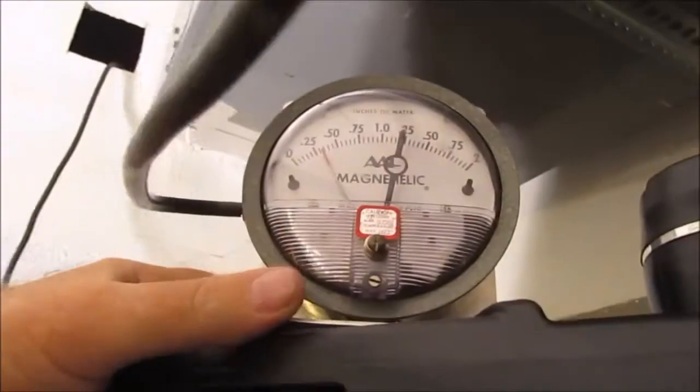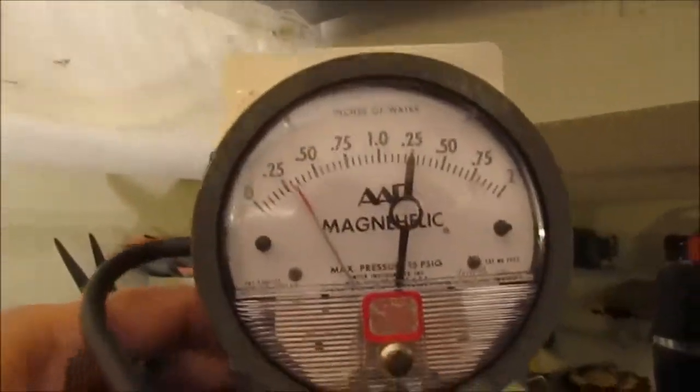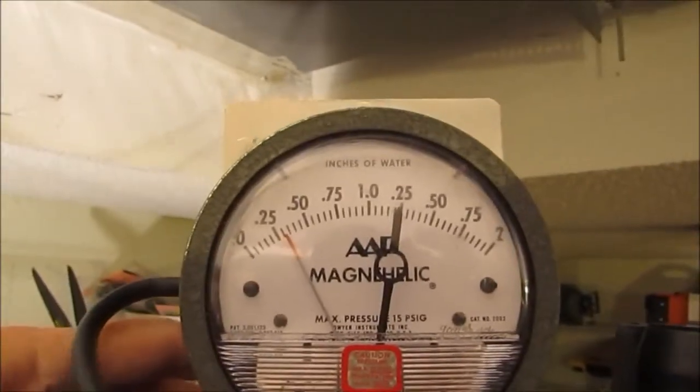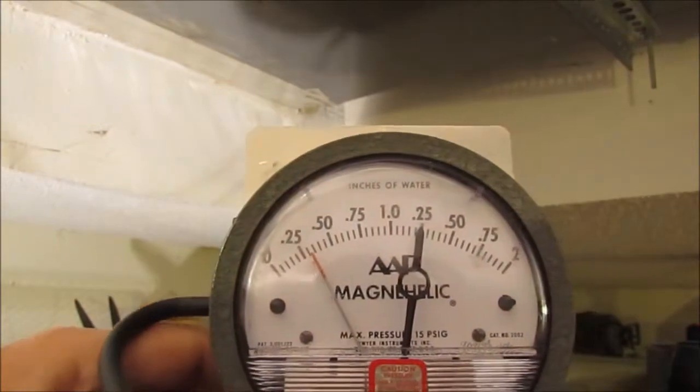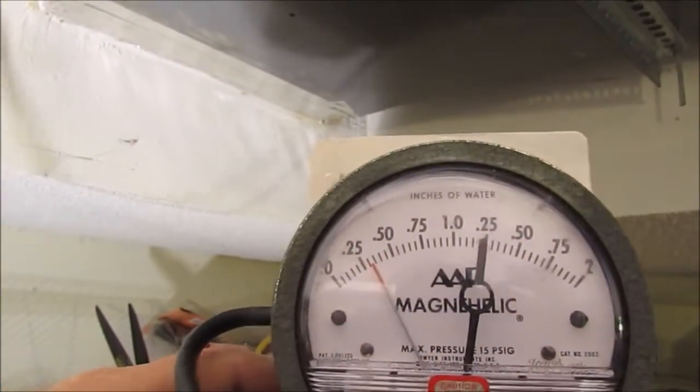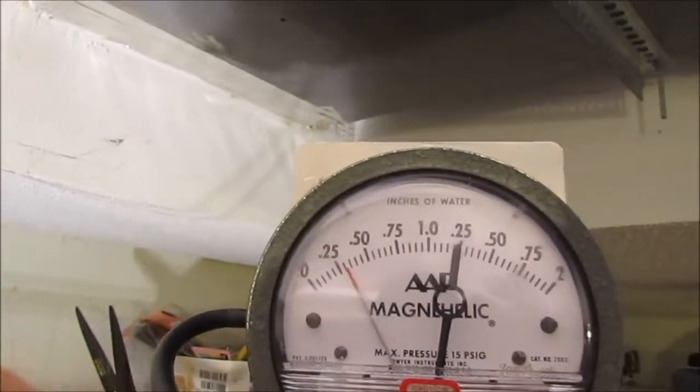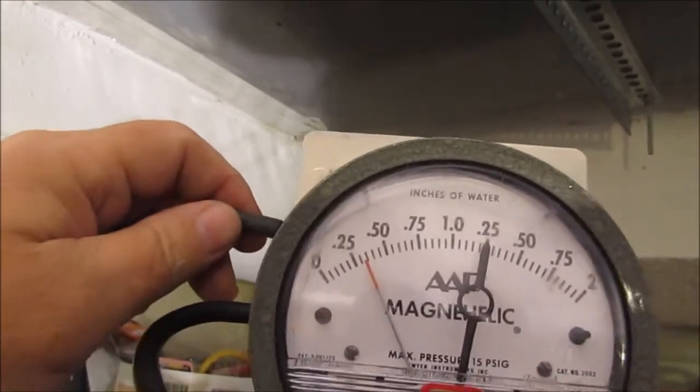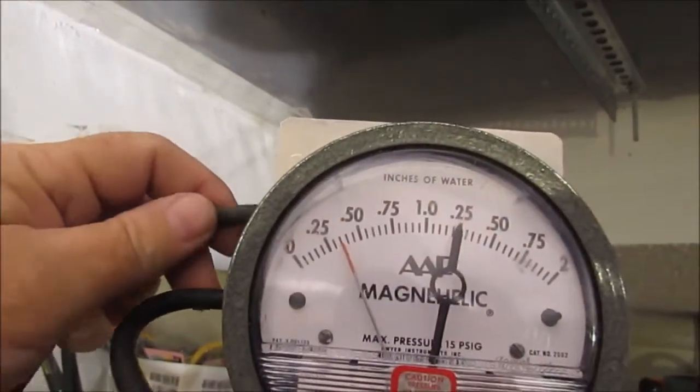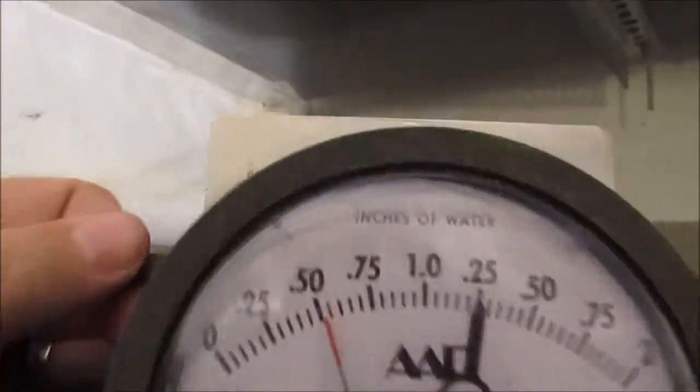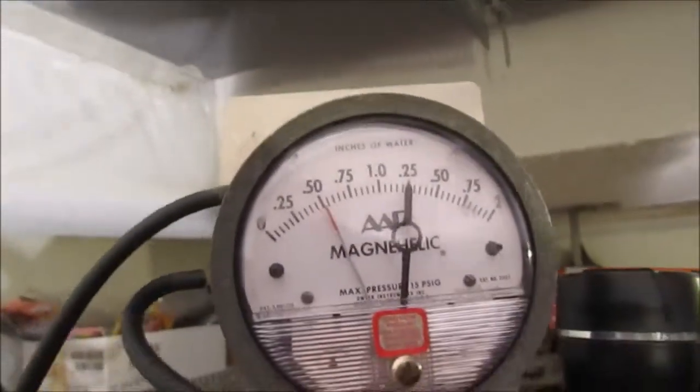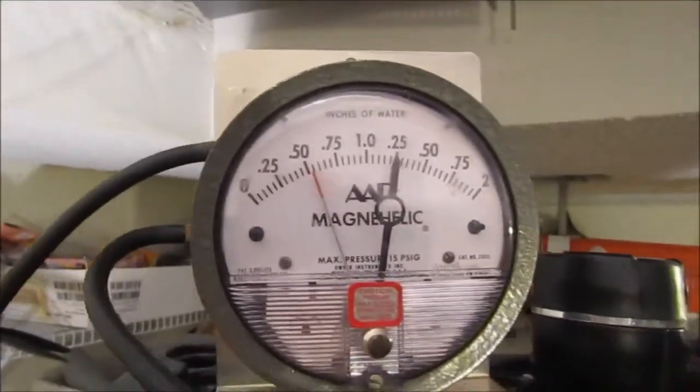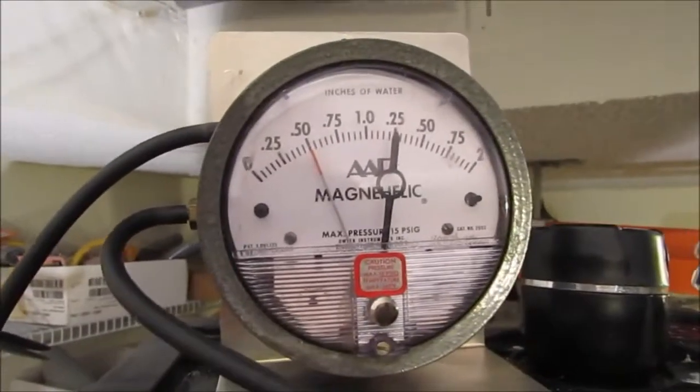If you want to read individual static pressures like the return, I'll remove the supply input to this gauge. That right there is the supply, which is around 0.3 to 0.35. This system is what it is - I cannot modify the ductwork.